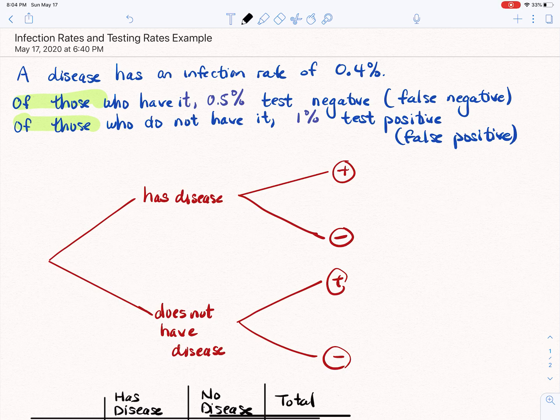Okay, so what we're going to do is look at a problem involving infection rates and see what kind of questions we can answer about it. So what we have here is a disease that has an infection rate of 0.4%, which basically just means 0.4% of people get it, and the remaining do not.